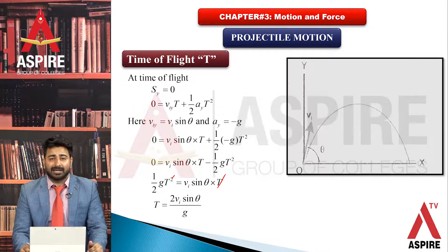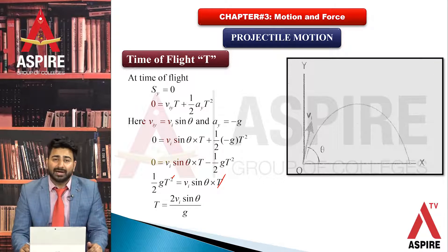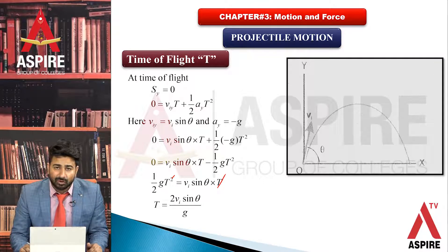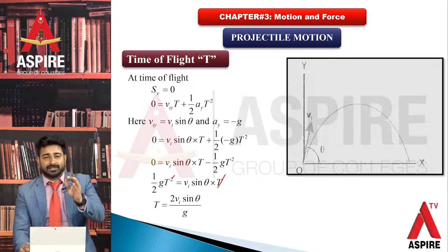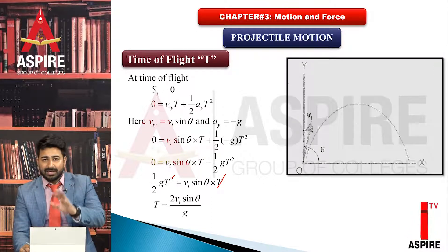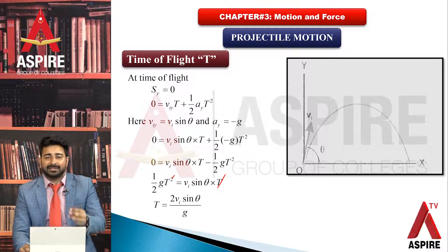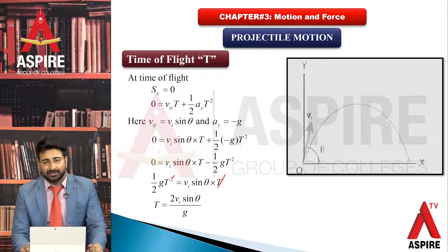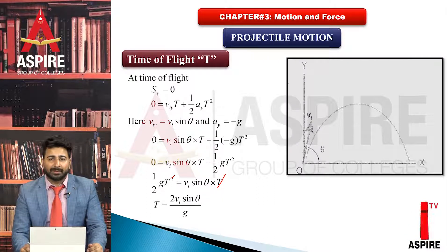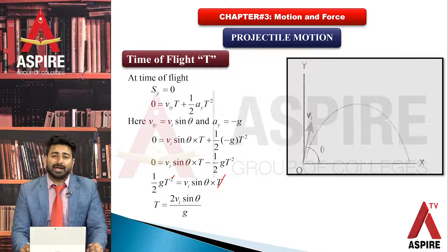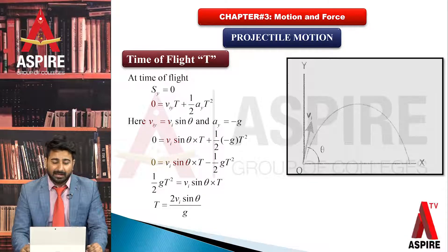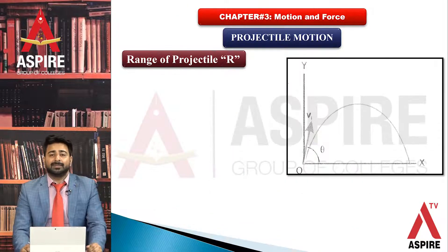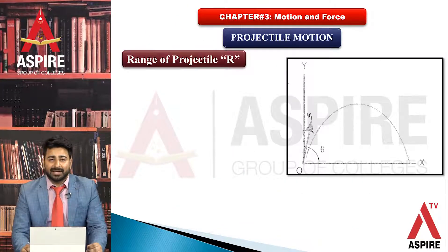One T from each side cancels, and our final time of flight formula is T = 2vi sinθ / g. Interesting point: again there are only two unknowns — initial velocity and theta. If both are known, time of flight can be found.